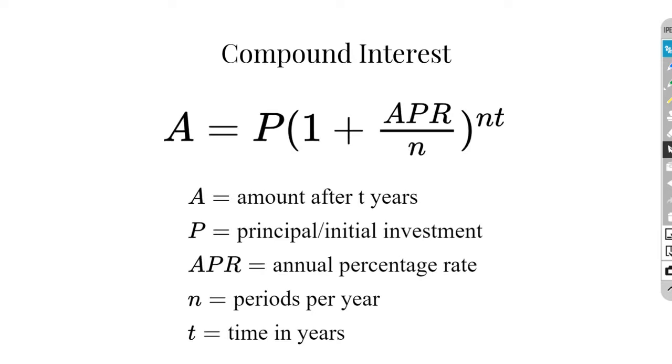This is our compound interest formula. As you can see, it's solved for the amount we would have in an account after t years. P is representative of our principal, or the initial amount that we're investing. Our APR is the annual percentage rate. That's how much interest is getting charged over a full year. Something to keep in mind here is that we will be given that number as a percentage, but when you use it in the formula, you need to change it to a decimal.